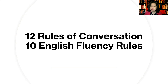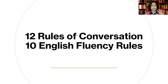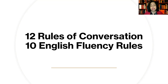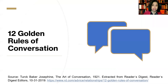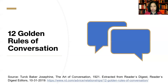The 12 rules come from a very old article that I found, and I believe it still works. And there are 10 English fluency rules. So if you want your conversation to be fluent, those 10 are like big advice — super advice — for you to become more fluent in English. Let's take a look at them. We'll start with the 12 golden rules for conversation, from a very old article from Reader's Digest, by Turk Baker Josephine.